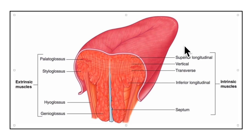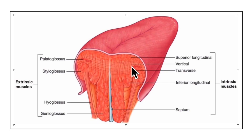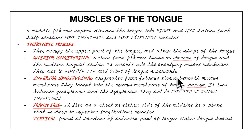The transverse muscle lies as a sheet on either side of the midline, deep to the superior longitudinal muscle but superficial to the genioglossus muscle. Contraction of the transverse muscle acts to narrow and increase the depth of the tongue. The vertical muscles are found at the borders of the anterior part of the tongue and make the tongue broad.